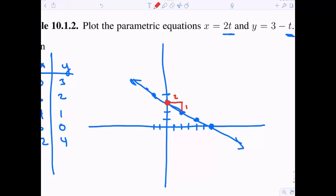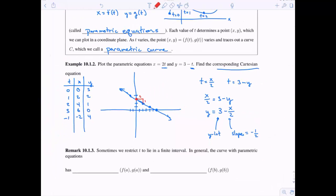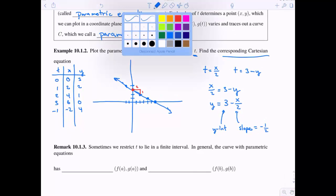And we can verify that on our graph. Here's the y-intercept at 3. And we can see when we move 2 to the right, I go 1 down. So that's going to be a slope of negative 1 half. So this Cartesian equation makes sense.